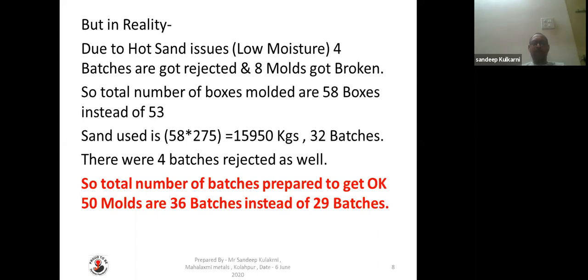But what happens in reality? Due to hot sand issues, low moisture, and dry sand, four batches got rejected and eight molds got broken. So total number of boxes molded are 58 instead of 53, and sand used is 58 into 275 kg, that is 1,595 kg — 32 batches. With four batches already rejected, total number of batches becomes 36 instead of 29 to make 50 good molds.